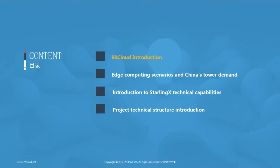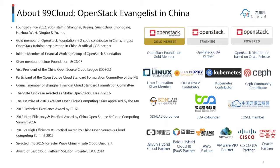We divided the whole sharing into four parts. The first part is Nanan Cloud's introduction. We have been founded since 1912 and we have 200 staff in Shanghai, Beijing, etc. We are a Gold Member of the OpenStack Foundation and an OpenStack COA partner. We also contribute code to open source projects like Kubernetes, SAF, and OpenDaylight.